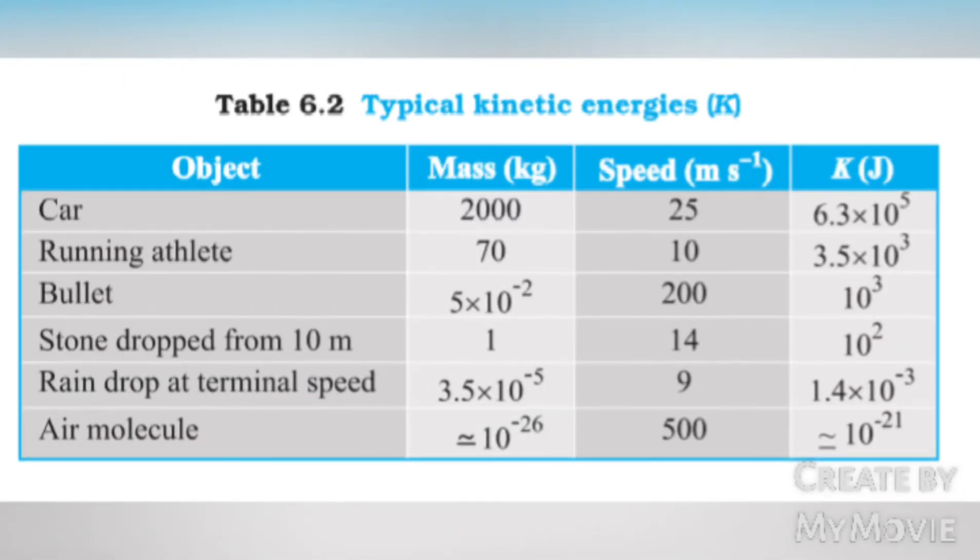Table 6.2: Typical kinetic energies. Car: mass 2000 kg, speed 25 m/s, kinetic energy 6.3 × 10^5 joules. Running athlete: 70 kg, 10 m/s, 3.5 × 10^3 joules. Bullet: 5 × 10^-2 kg, 200 m/s, 10^3 joules. Stone dropped from 10 m: 1 kg, 14 m/s, 10^2 joules.